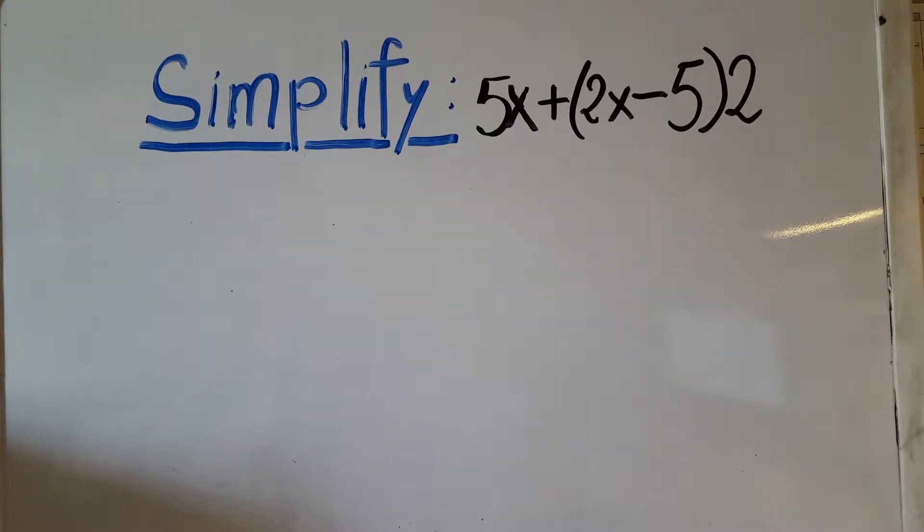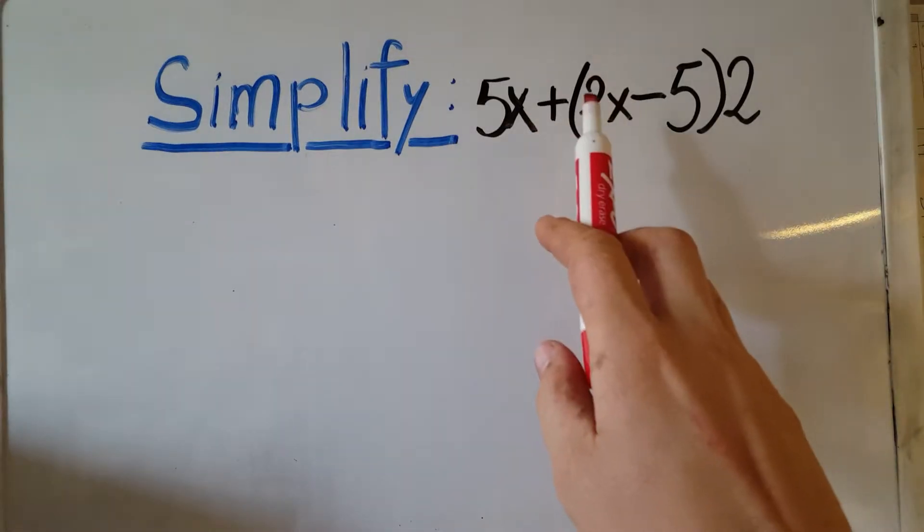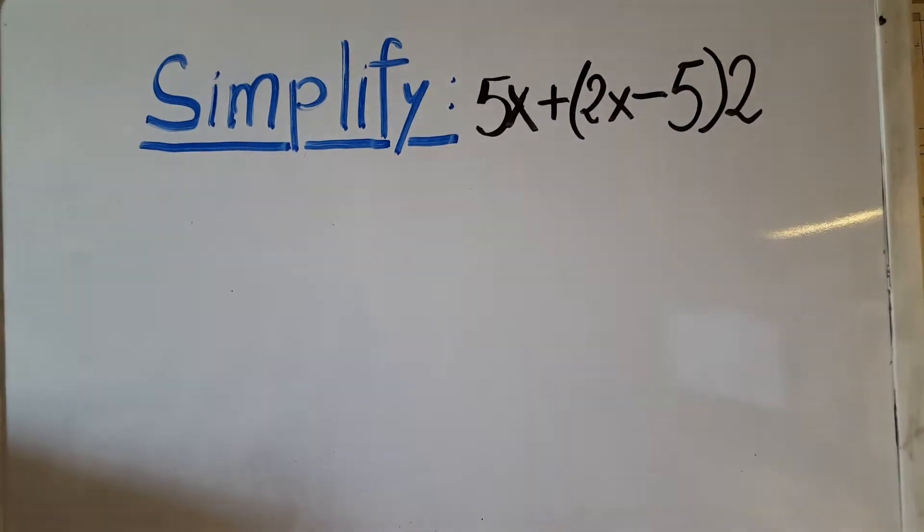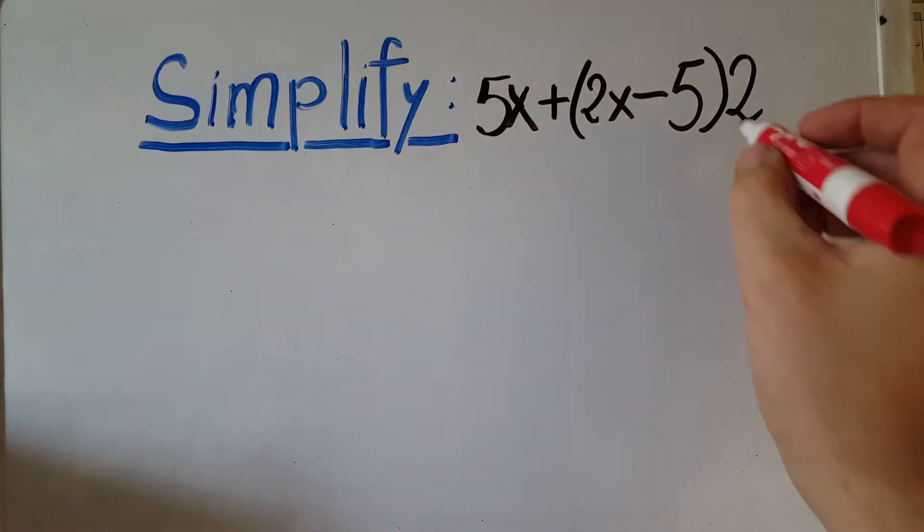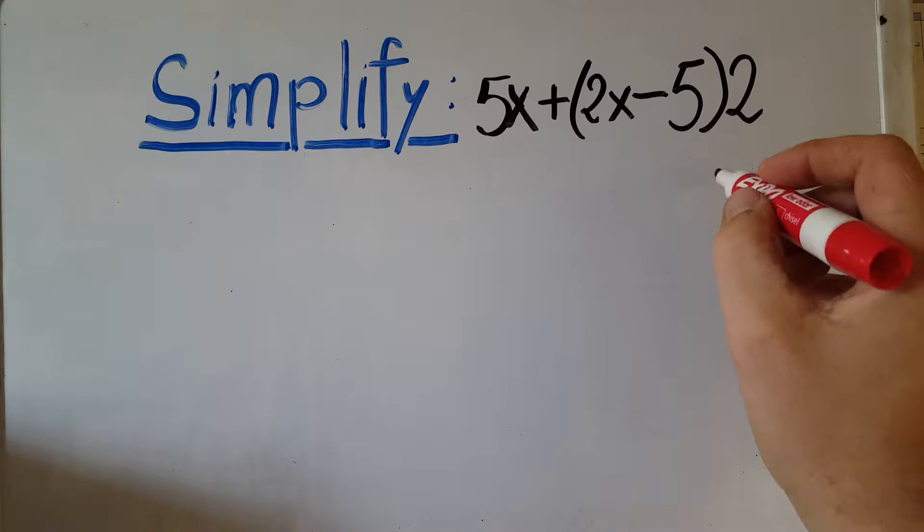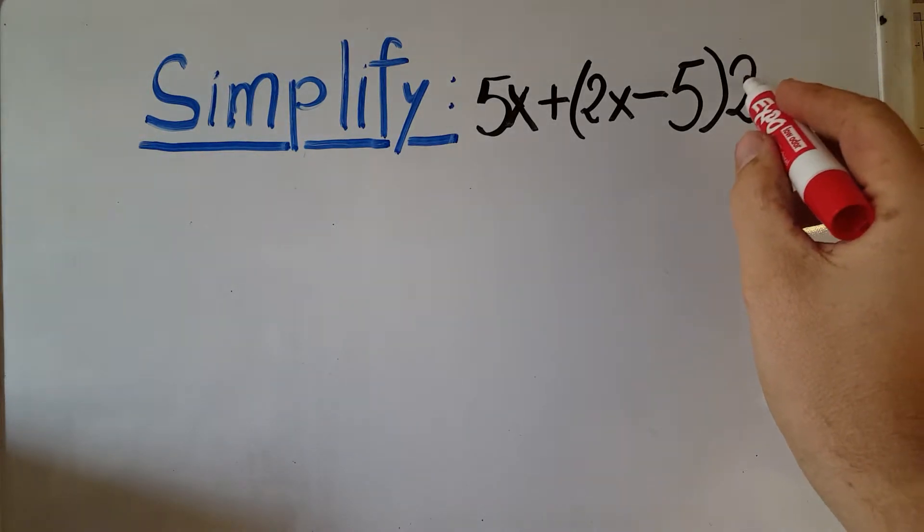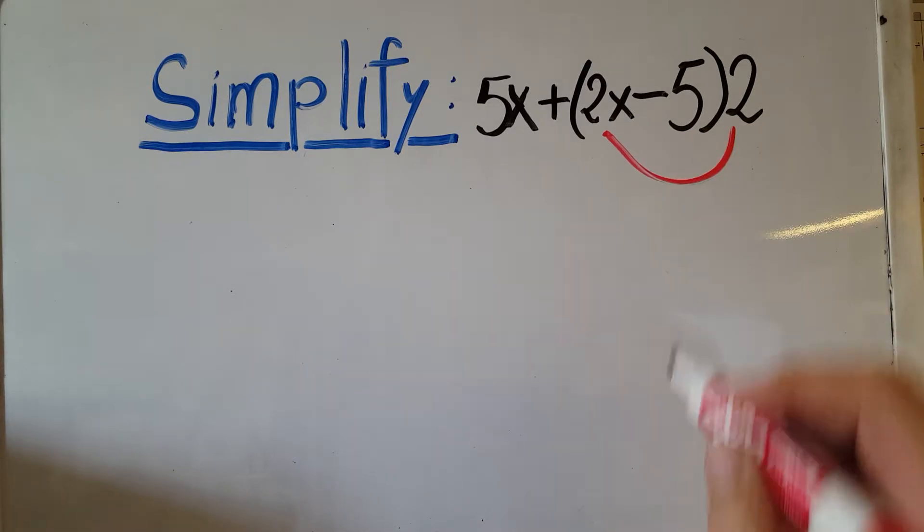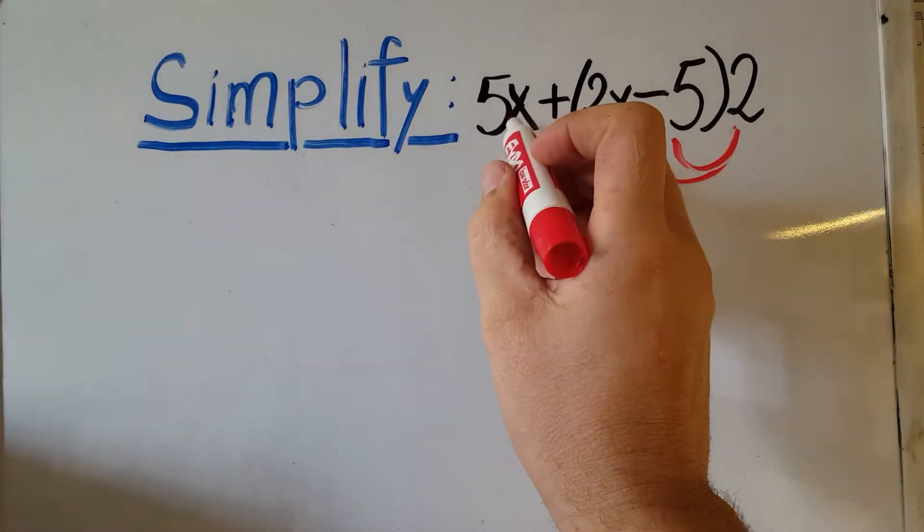Alright, in this problem they want us to simplify this expression: 5x plus 2x minus 5 inside the parentheses, multiplied by 2. Okay, first let's go ahead and use the distributive property, and we're going to work with this 2 and the parentheses. So we're going to multiply the 2 over here and over here.